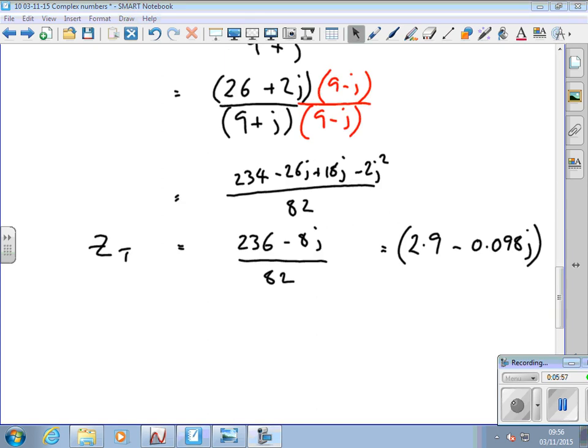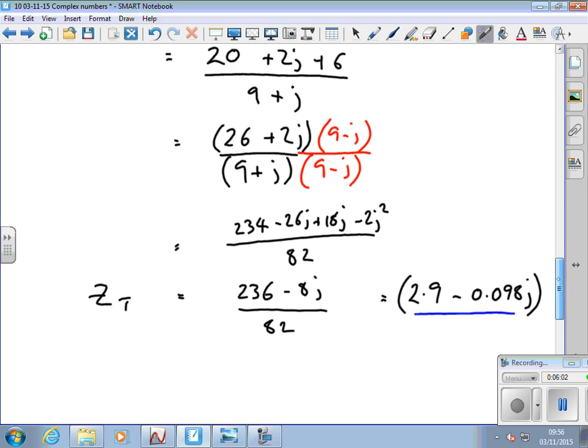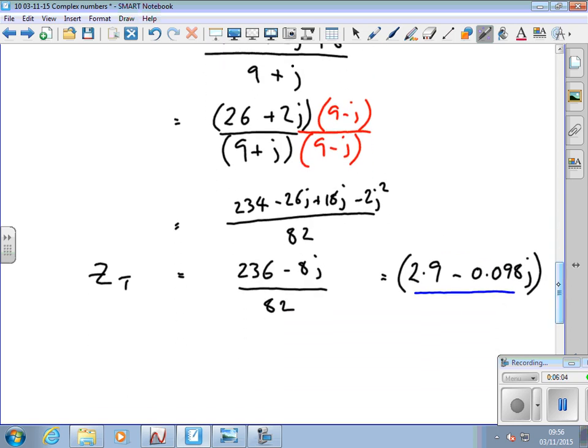So we get ZT equal to 2.9 minus 0.098j to two significant figures, and there's the working if you want to check it.